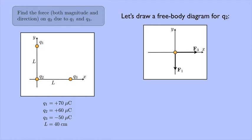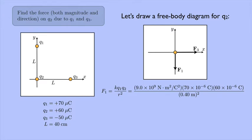Now we can use Coulomb's Law to calculate the magnitude of each of these forces. So for force 1, Coulomb's Law says KQ1Q2 over R squared. K is just a constant. It's 9.0 times 10 to the 9th newtons times meters squared per Coulomb squared. Q1 is 70 microcoulombs. A microcoulomb is 10 to the negative 6 Coulombs. So that's 70 times 10 to the negative 6 Coulombs. And then Q2 is 60 times 10 to the negative 6 Coulombs.